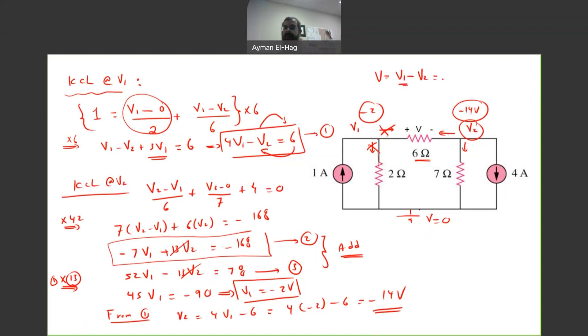V1 what? It is minus 2. Minus V2 is minus 40. So, this is giving me 12 volt.